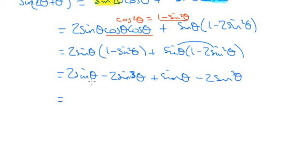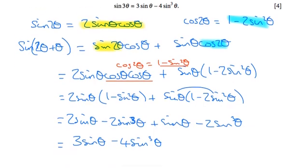And if we tidy all that up, we've got 2 sine thetas there and another sine theta there. So that's 3 sine thetas. And here we've got minus sine cubed theta minus another 2 sine cubed theta. And we get 3 sine theta minus 4 sine cubed theta, which is what we were looking for.